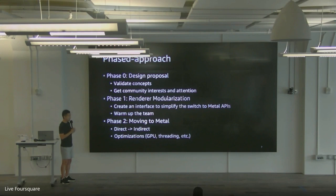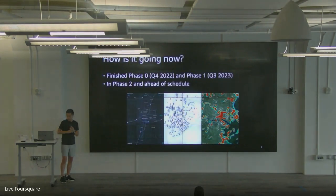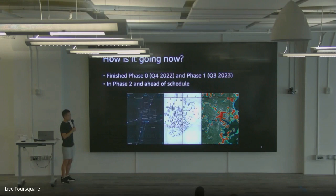That phase also became a good opportunity to warm up the team so they could iterate on how to work together, manage each other's work, and review and merge code. Right now we are on phase two, moving to using Metal — first a simple direct implementation, then indirect implementation, then GPU and multi-threading optimizations. We've finished the first two phases and are surprisingly ahead of schedule. This is probably the first project I've worked on that got ahead of schedule, and it's weird that it's not even a company-driven project — it's more like a community collaboration.